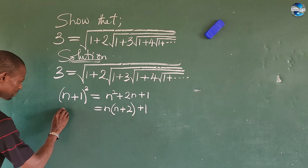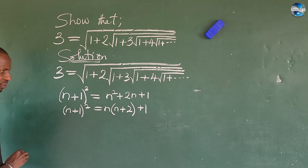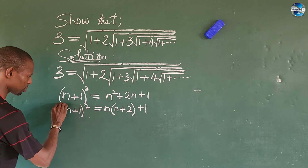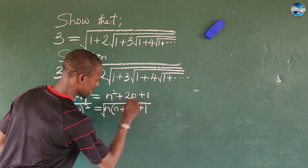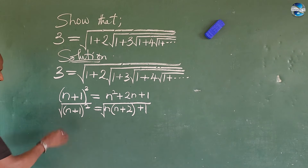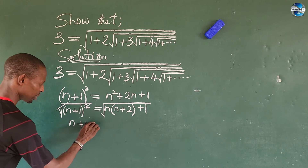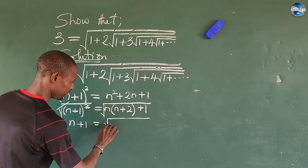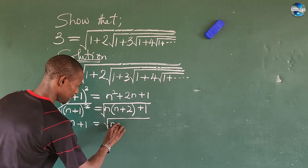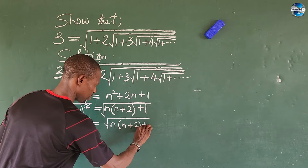So from what we have on this other side, let's put this down: (n+1)² equals n(n+2)+1. If I take the square root of both sides, I equally take the square root of this side too. So this will give us n+1 equals the square root of n(n+2)+1. This has not changed anything.